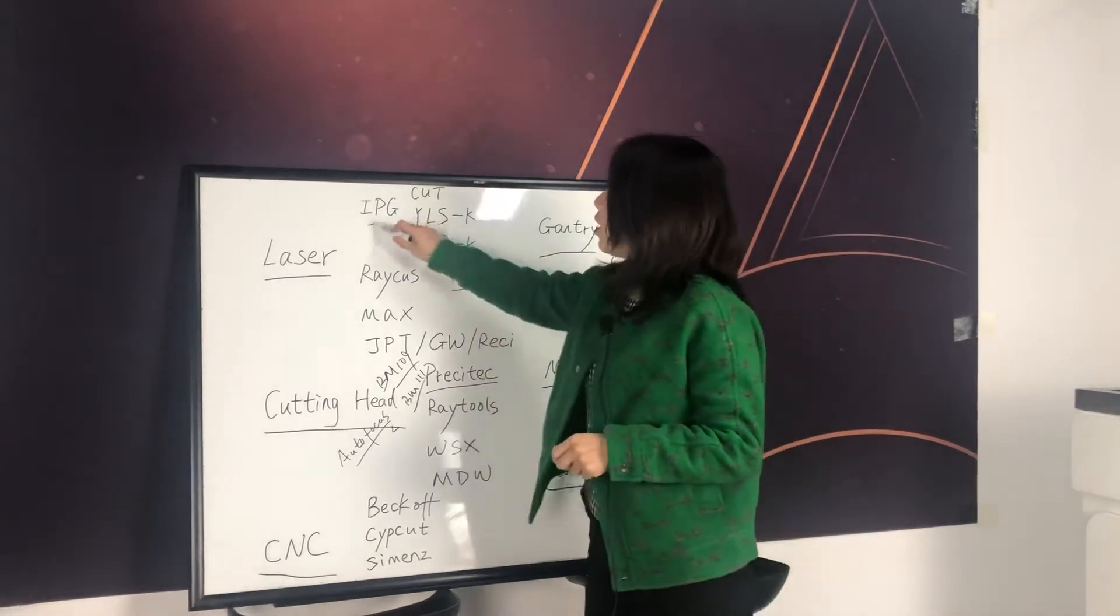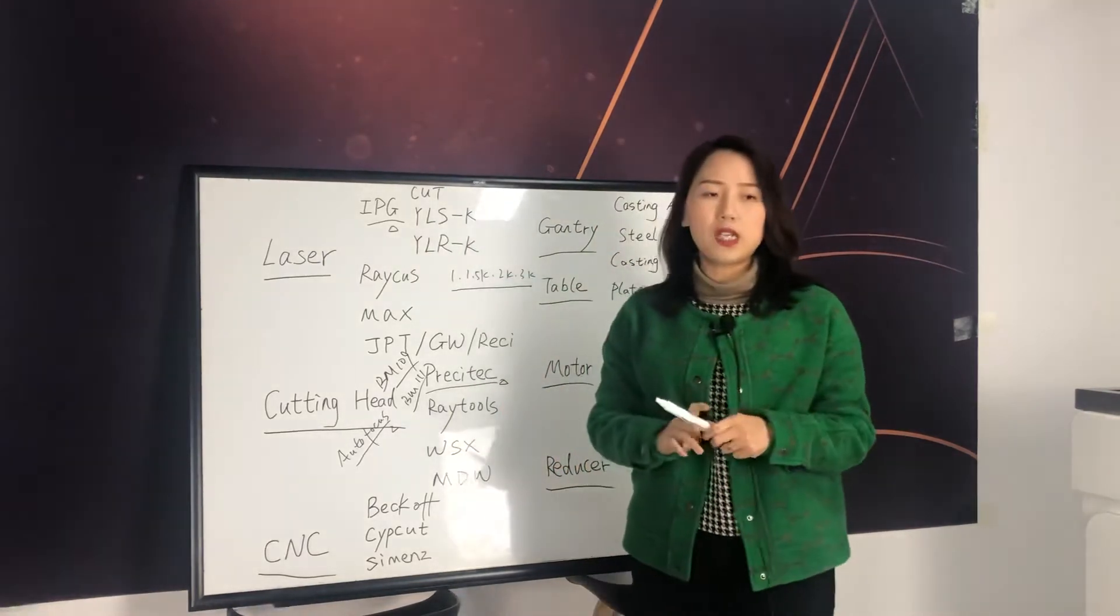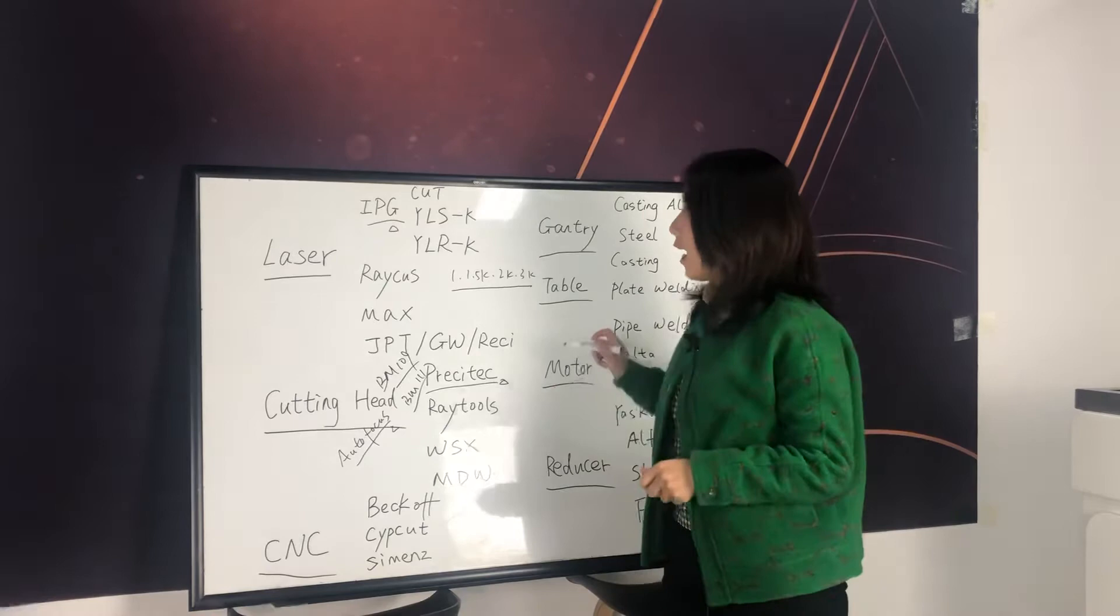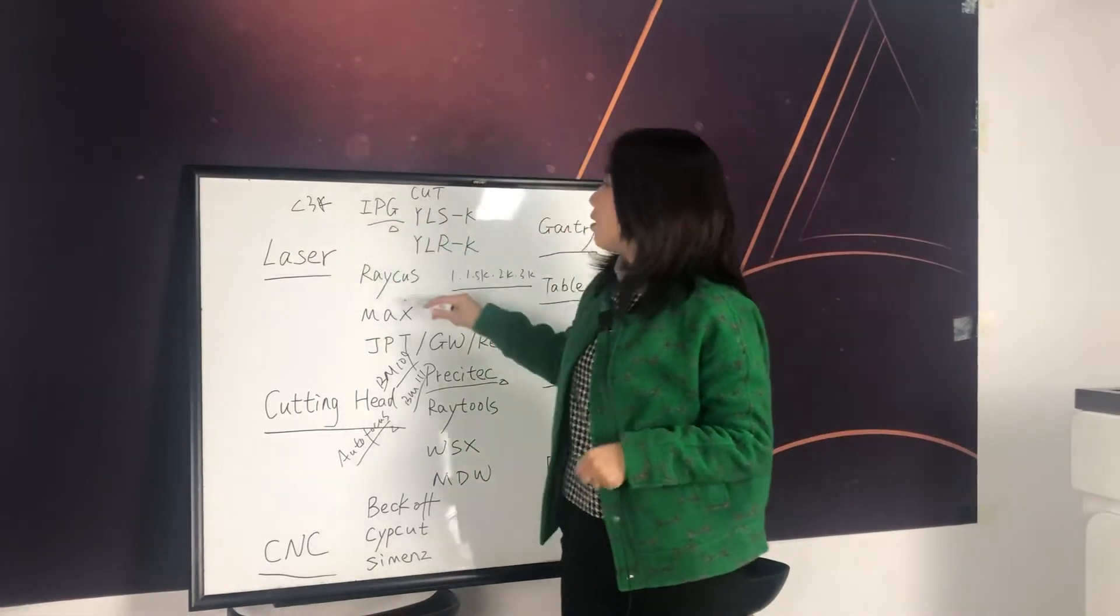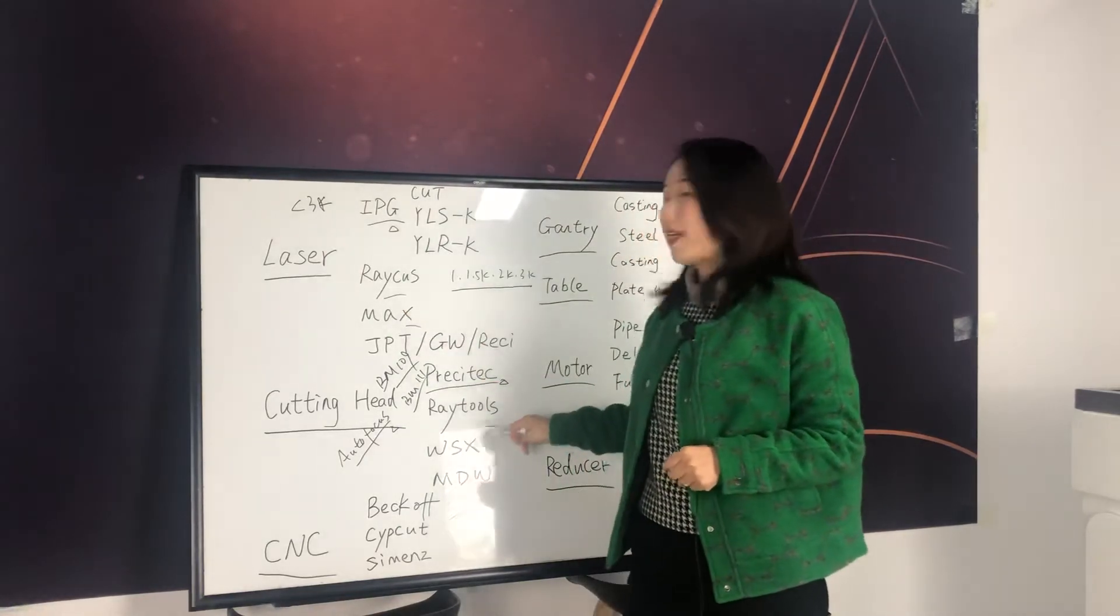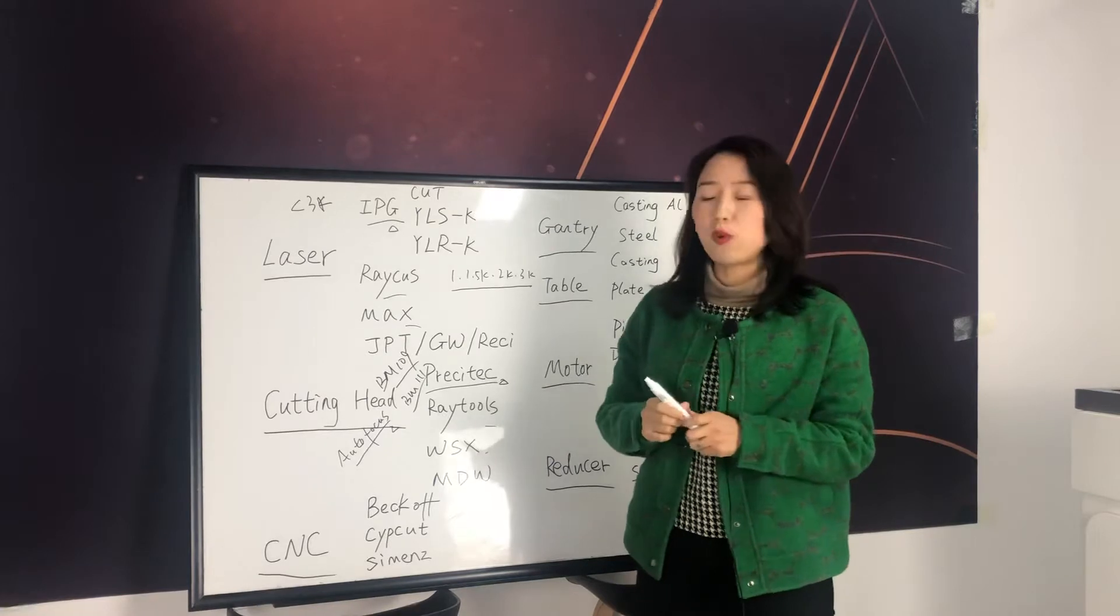Maybe because the price is going down of this auto focusing, BM 109 and BM 111 for different power range. Precitec and IPG, these are top brands. We normally don't use them for entry level machine. So for entry level machine, the power less than 3K, basically we're more using Chinese lasers and Chinese cutting head. That's what we call reasonable configuration.